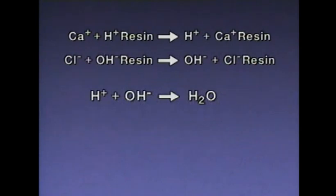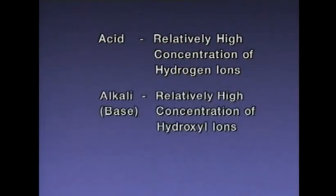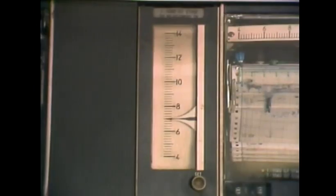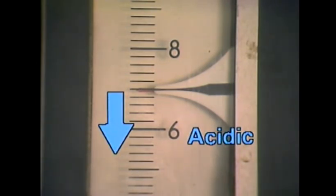Neutralization reactions are commonly used to neutralize liquids that have relatively high concentrations of hydrogen ions or hydroxyl ions. When a liquid contains a relatively high concentration of hydrogen ions, it's called an acid. When a liquid contains a relatively high concentration of hydroxyl ions, it's called an alkali or a base. The acidity or alkalinity of a liquid can be measured using a device called a pH meter. A reading of 7 on the meter indicates that the liquid is neutral. A liquid with a pH of less than 7 is acidic.